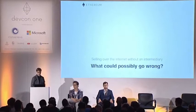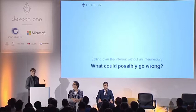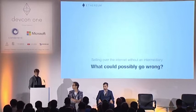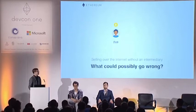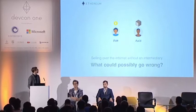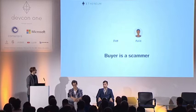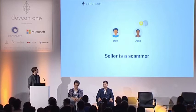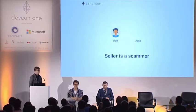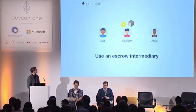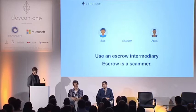We're trying to create an application that allows you to sell things over the internet. Bob has some money and wants to buy an item from Alice. One way would be for Alice to first send the item, but that could go wrong. The other way would be for Bob to first send the money, but that could also go wrong. Usually you use an escrow, but that could also go wrong.